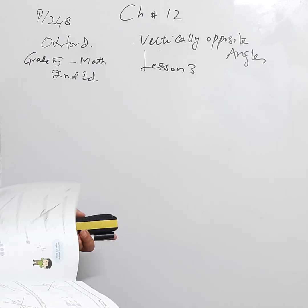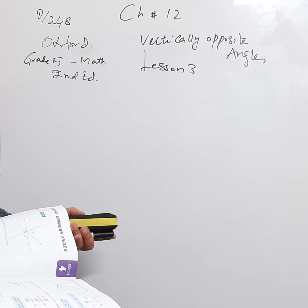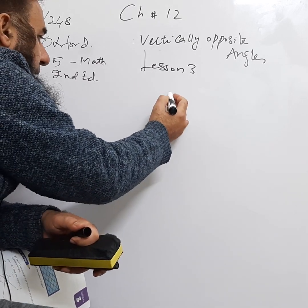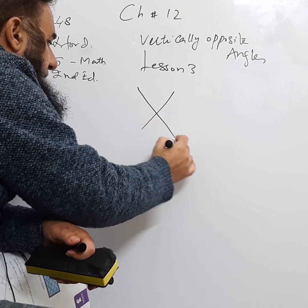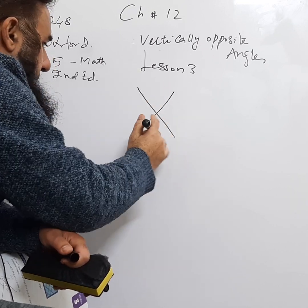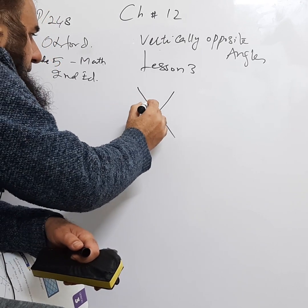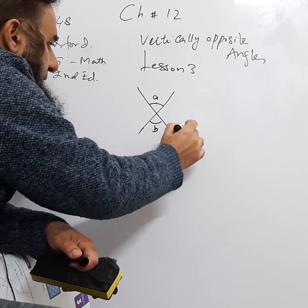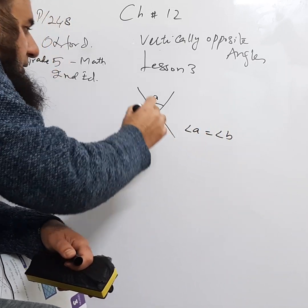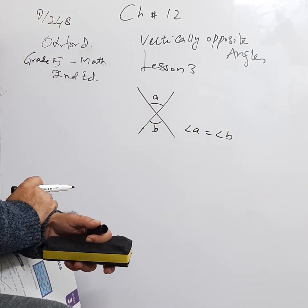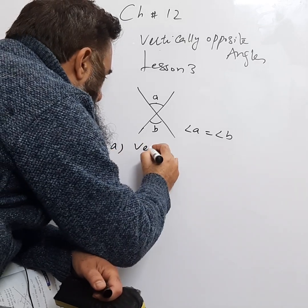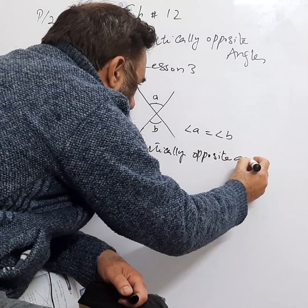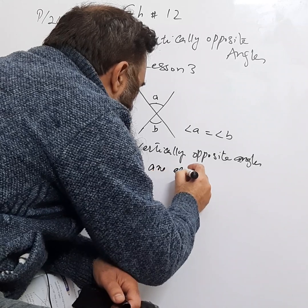In this chapter we need to understand two concepts. First: vertically opposite angles. Wherever there is an X — two lines crossing like this — this angle, let's call it A, and the angle opposite to it, B, are equal. We can say angle A is equal to angle B because these are vertically opposite angles.